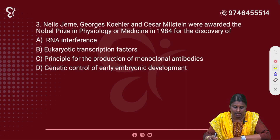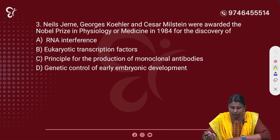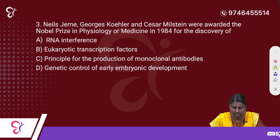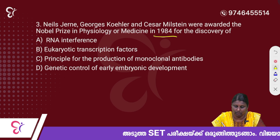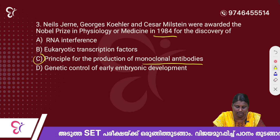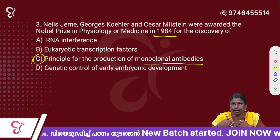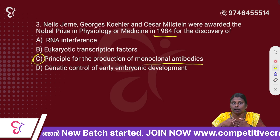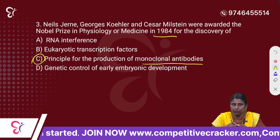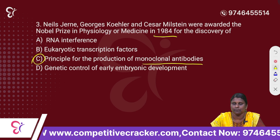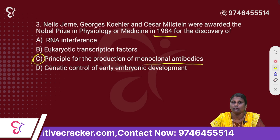Third question: Niels Jerne, George Kohler and Caesar Milstein were awarded the Nobel Prize in Physiology or Medicine in 1984 for the discovery of — Option A: RNA Interference. Option B: Eukaryotic transcription factors. Option C: Principle for the production of monoclonal antibodies. Option D: Genetic control of early embryonic development. The correct answer is Option C: principle for the production of monoclonal antibodies.